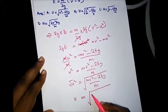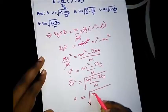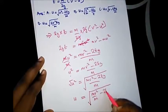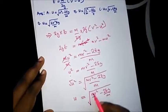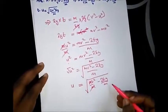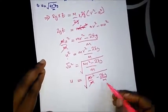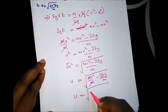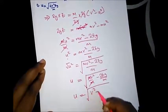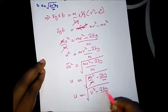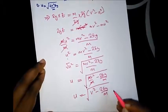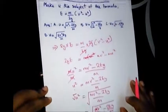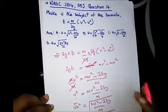Let's arrange this. This MV squared over M simplifies, so we can further simplify this as U is equal to the square root of V squared minus 2EG over M. Our correct option here is option A.